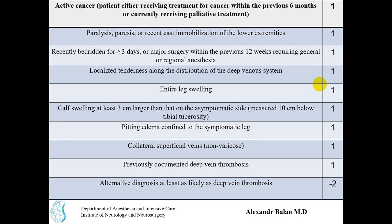Let's read every one of these conditions, as they are important. Active cancer: the patient is receiving treatment for cancer within the previous six months, or currently receiving palliative treatment — one point. Paralysis or recent cast immobilization of the lower extremities — one point. Recently bedridden for more than three days, or major surgery within the previous 12 weeks requiring general or regional anesthesia — one point.